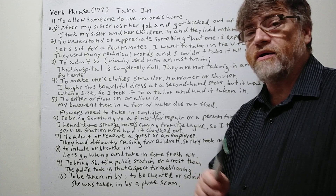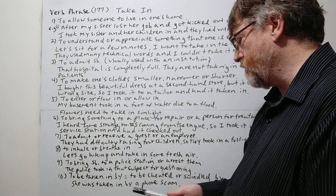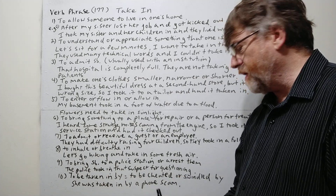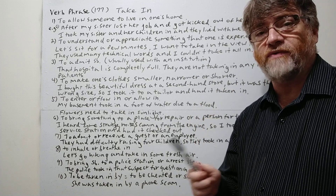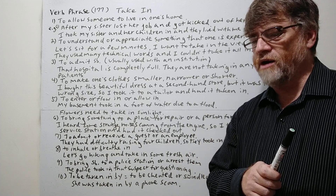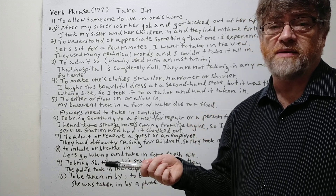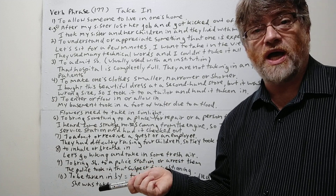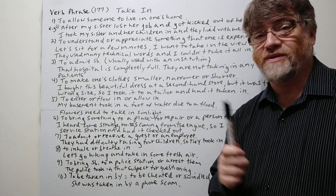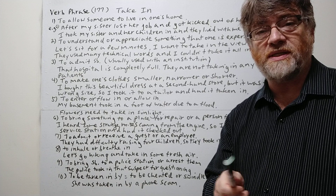The tenth meaning is 'to be taken in by' someone or something, meaning you were cheated or swindled. For example: 'She was taken in by a phone scam' — maybe they convinced her to wire money. In some scams, criminals tell someone their child was kidnapped, and the person panics and wires money — they get taken in. So you can be taken in by a scam or any kind of trick.